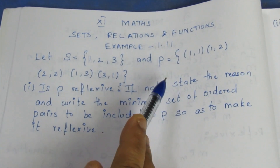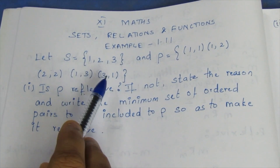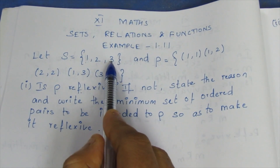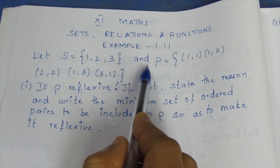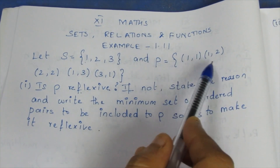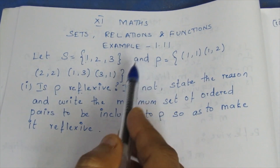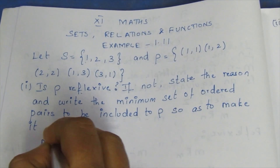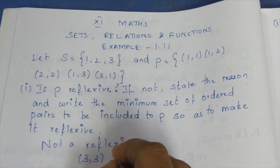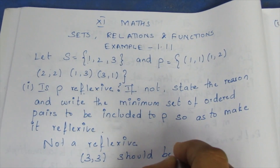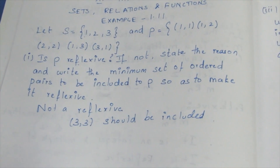So, what is reflexive? P is not reflexive. (3,3) should be included to make P reflexive. The question is very difficult but the answer is very simple.